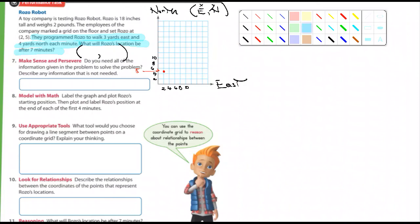All right. I want you to answer this question. Do you need all of the information given to solve the problem? Okay. And it says, describe any information that's not needed. So, if there's some information we don't need, tell me what it is. Write it in here. I know they don't give you much room. Number 8. Label and graph and plot Rozo's starting position, then plot and label his position at the end of each of the first 4 minutes. End of each of the first 4 minutes. Okay. So, you're going to do 1 minute, 2 minutes, and you're going to mark that. 3 minutes. And then 4 minutes. Because they want to know the first 4 minutes. So, you can answer that question.